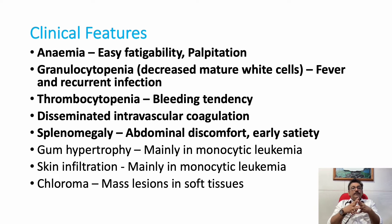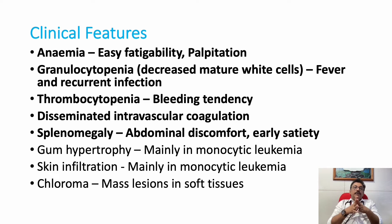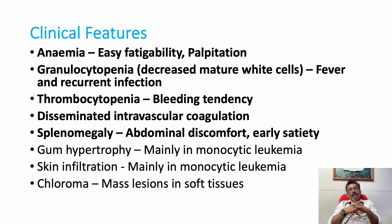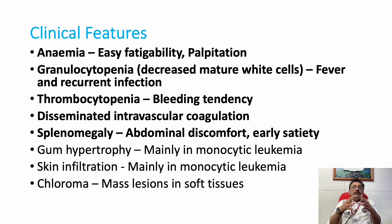Thrombocytopenia: because the bone marrow is full of abnormal white cells, the patient can have petechial rashes, bleeding tendencies, and gum bleeding. Disseminated intravascular coagulation is another important bleeding problem present in various hematological malignancies. Splenomegaly occurs because abnormal cells are destroyed in the spleen; when there is bone marrow infiltration or failure, the spleen can be infiltrated or enlarged due to unusual destruction of cells, causing abdominal discomfort and early satiety.